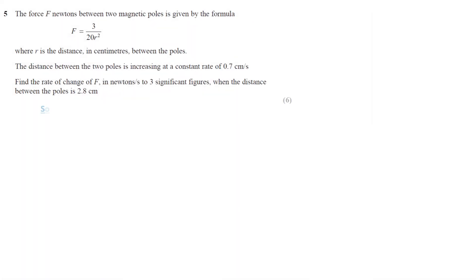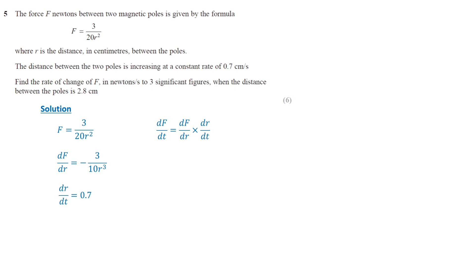In this question, the formula for f is 3 over 20r squared. The rate of change of f with respect to r is negative 3 over 10r cubed. We are given that dr over dt is 0.7. To find df over dt, we use the chain rule: df over dr times dr over dt. Substituting the values, we get negative 3 over 10r cubed times 0.7. We need to find the rate of change of f when r equals 2.8. Substituting r equals 2.8, we calculate df over dt equals 0.00957.